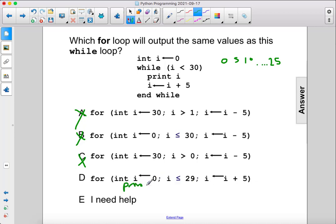It says print i. It's going to first print 0, then 5, and so on to 25, but then 30 will break the loop. The answer is D.